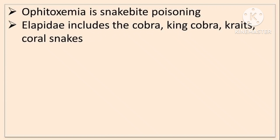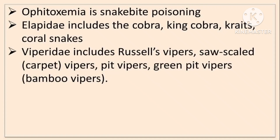Snakes are classified into three groups: Elapids, Vipers, and Sea Snakes. Elapids include Cobra, King Cobra, Krait, and Coral Snakes. Vipers include Russell Viper, Saw-Scale Viper, Pit Viper, Green Pit Viper, and Bamboo Viper.